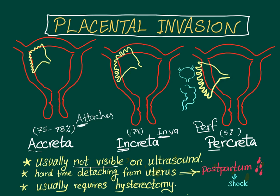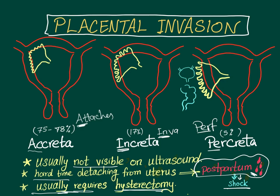The problem with these placental invasions is that they are strongly attached to the uterine wall. At the time of delivery, when the placenta is supposed to detach after the fetus, there is difficulty detaching the placenta from the uterus, which can lead to postpartum bleeding and shock. Management typically requires hysterectomy — removal of the uterus.